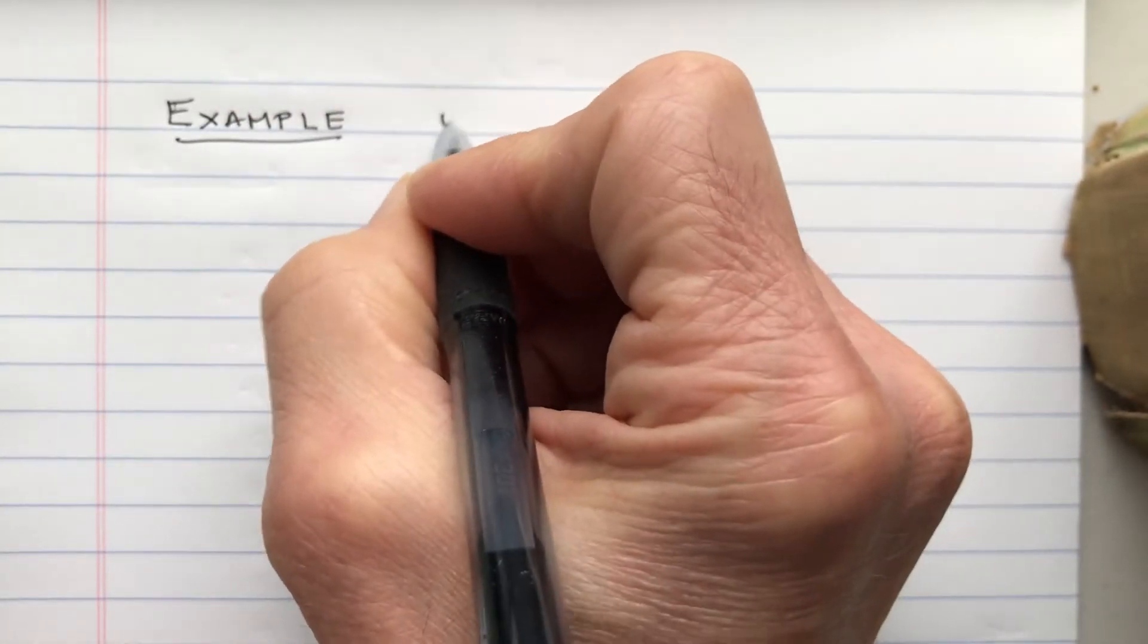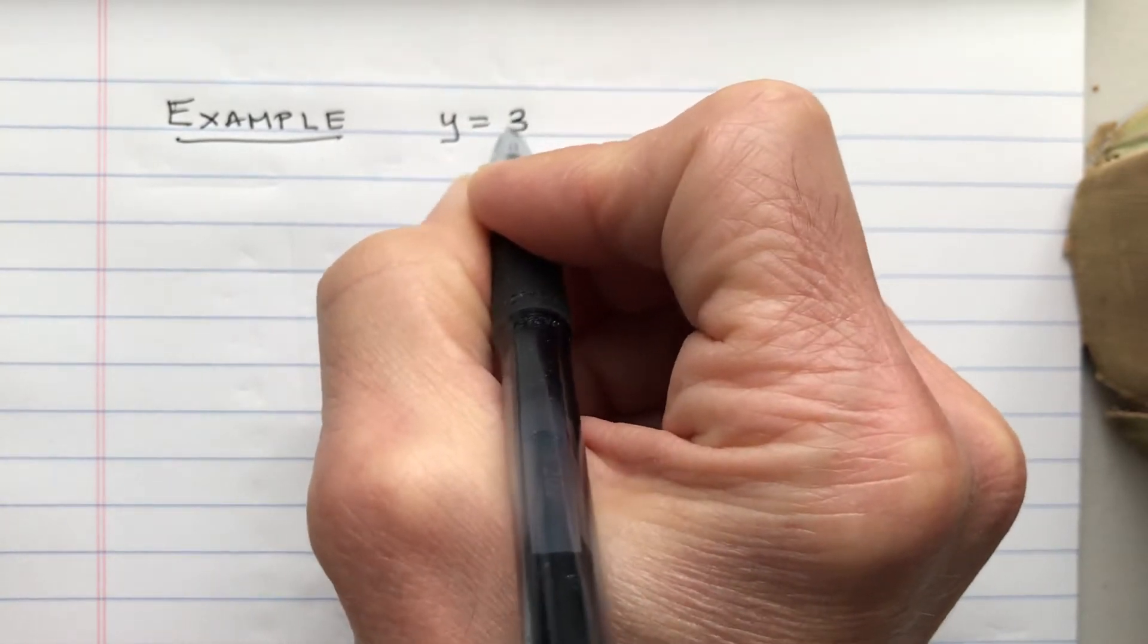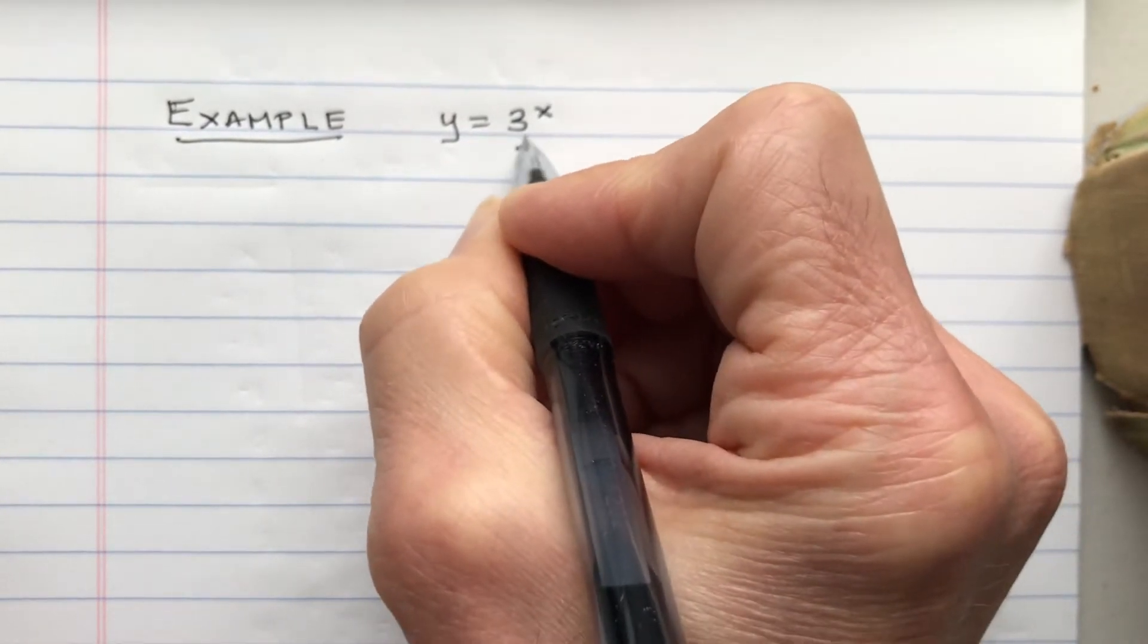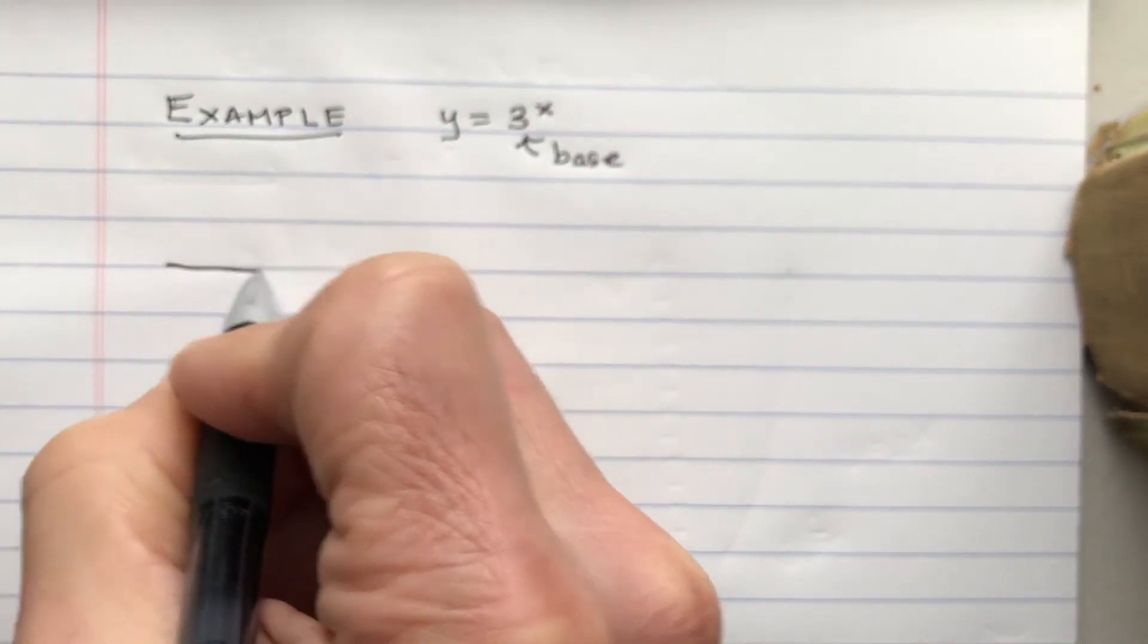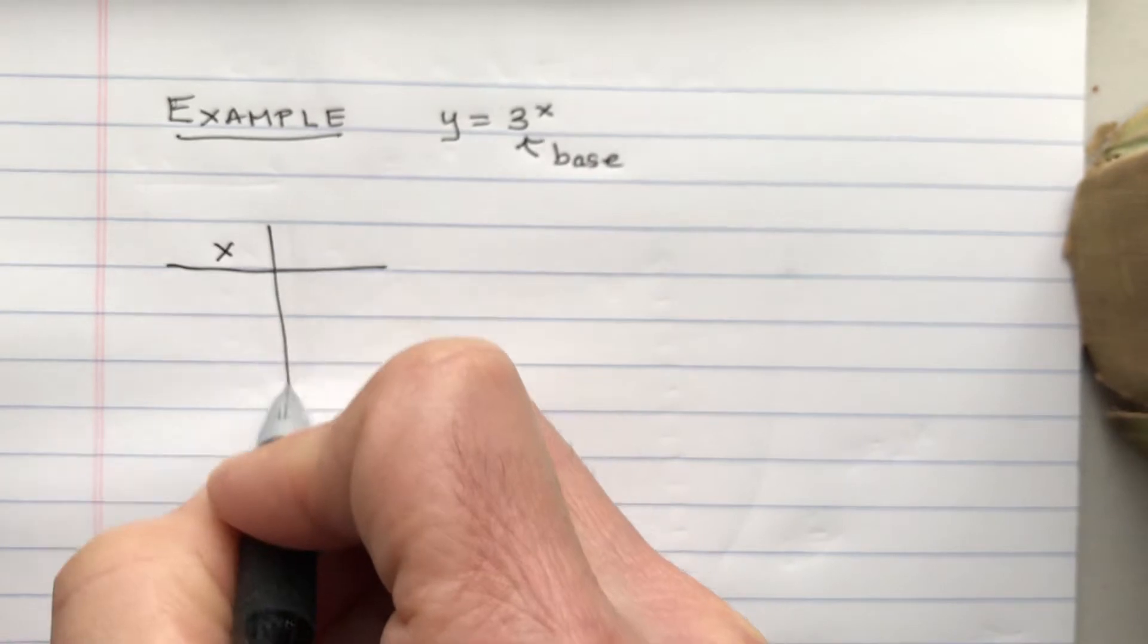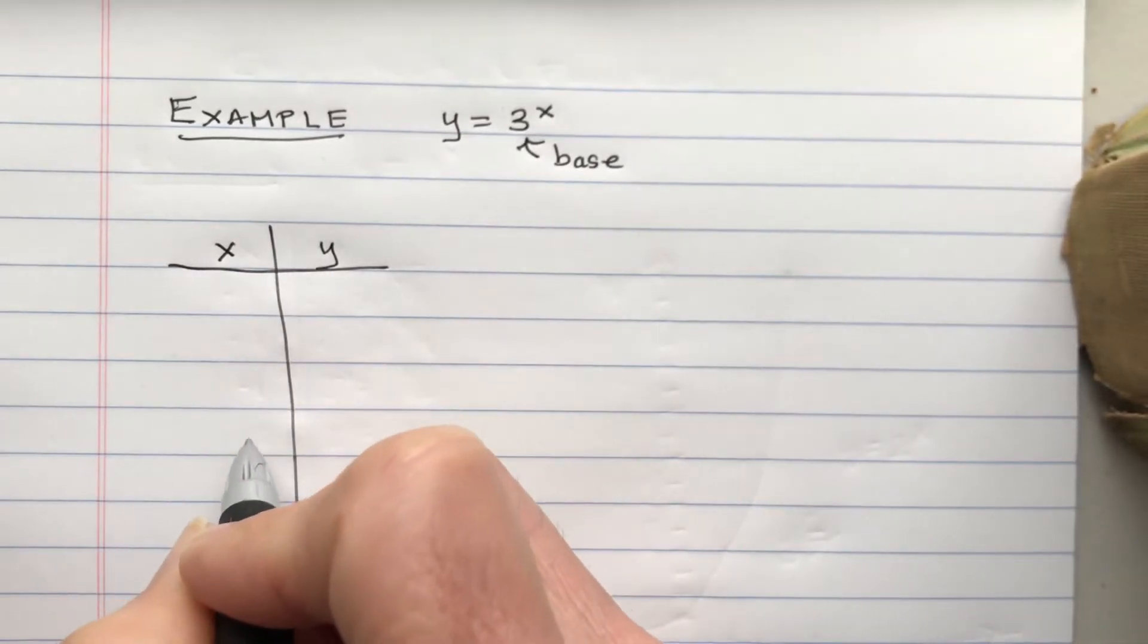Let's look at this exponential function y equals 3 to the x. This part down here is called the base of the exponential function and what I'm going to do is once again I'm going to plot points and see what happens.